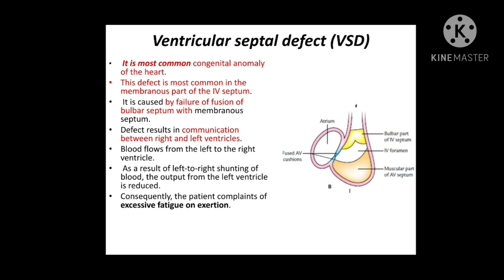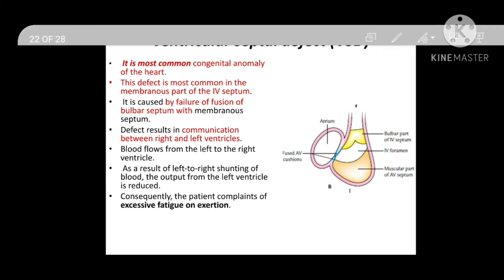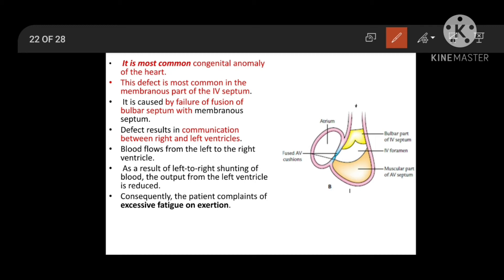Now coming to anomalies — the most common congenital anomaly of the heart is ventricular septal defect (VSD), and it most commonly occurs in the membranous part of the IV septum. If the membranous part is not formed, the gap remains between the bulbar and muscular septum, leading to formation of VSD and communication between the left and right ventricle.